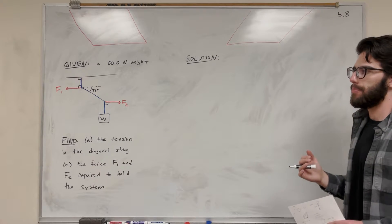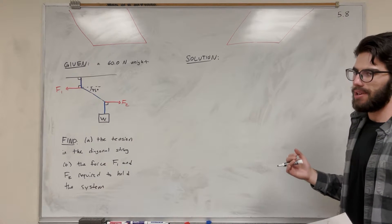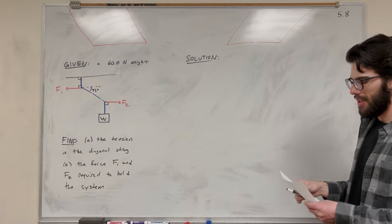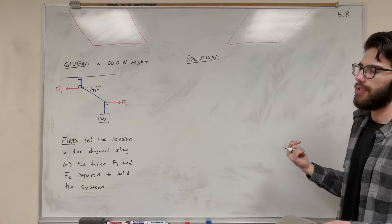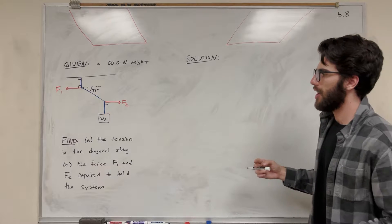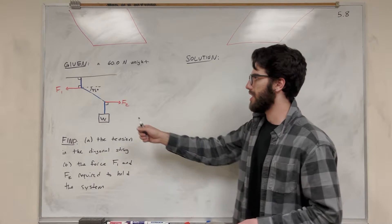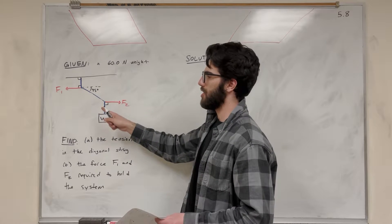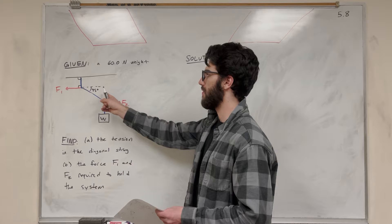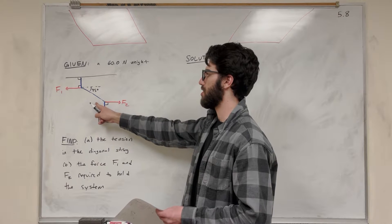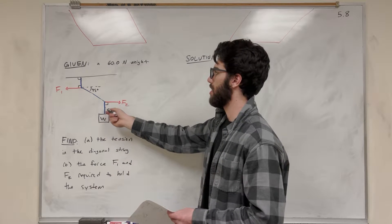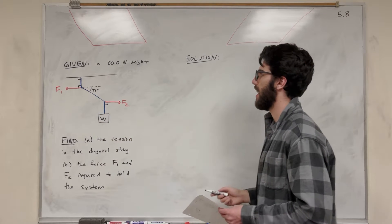This might look like a complicated problem but it's going to be really easy. Always when you start, you want to do a force body diagram. We're looking at part A — we want to find the tension in this string, so we want to make sure when we choose our force body diagram it involves the tension of this string. I'm going to choose this location here where these three forces interact.